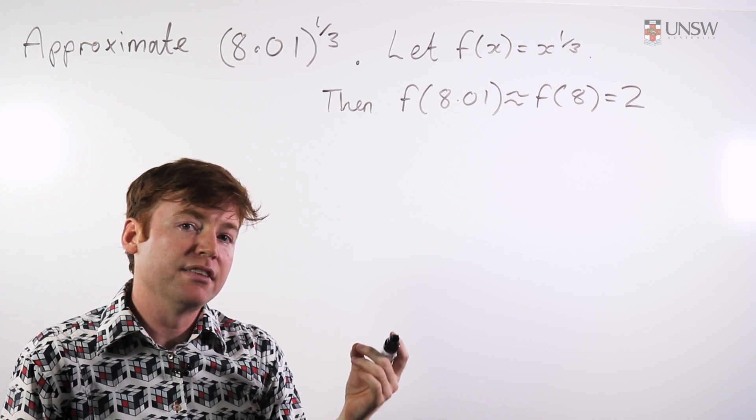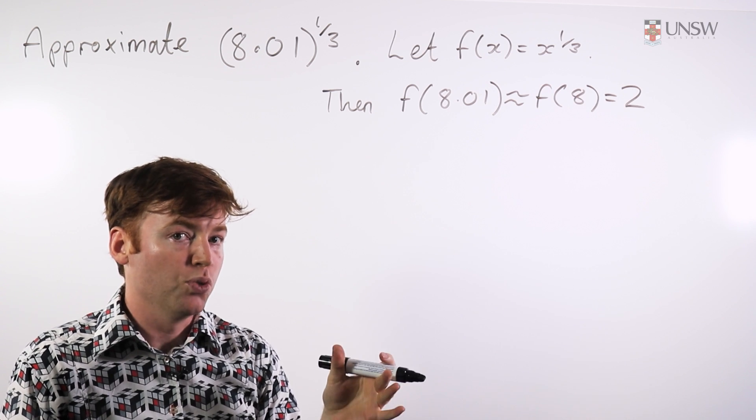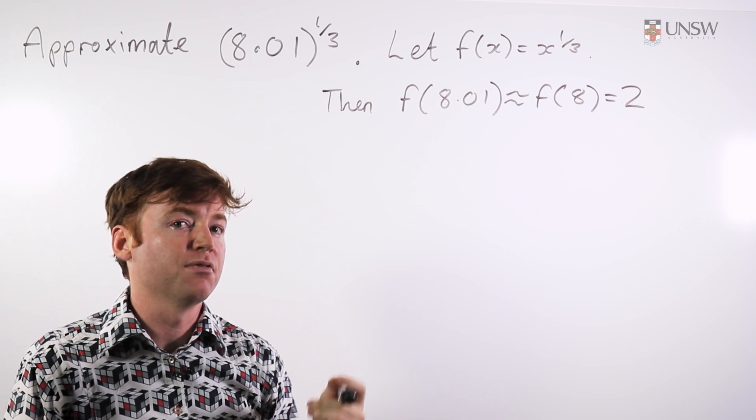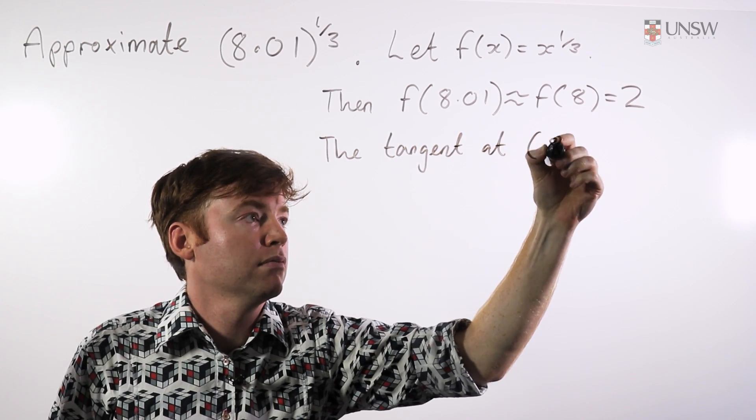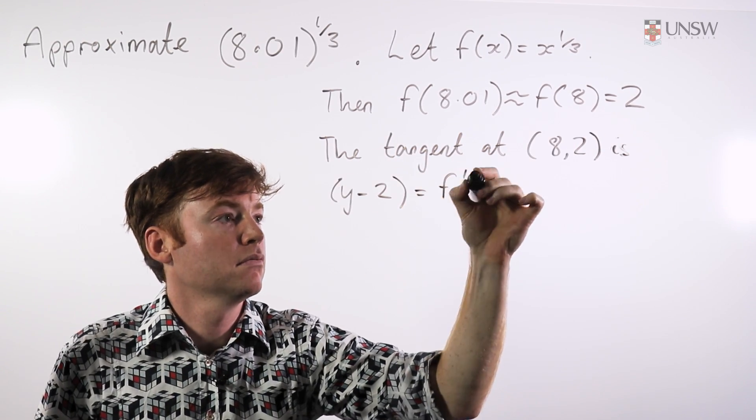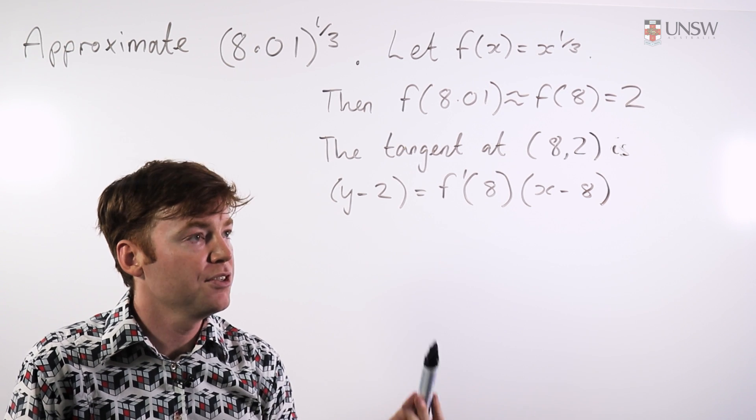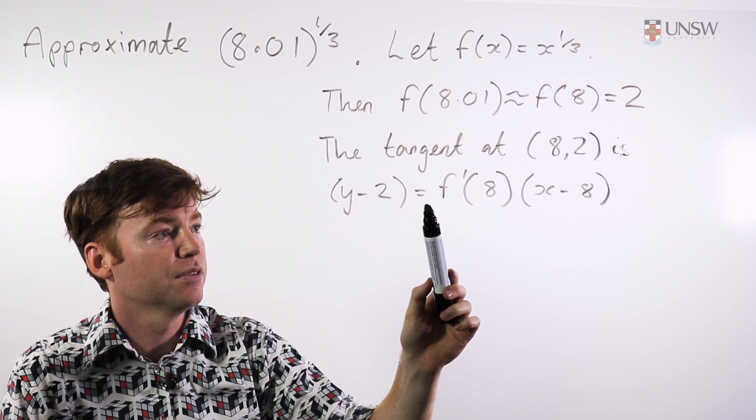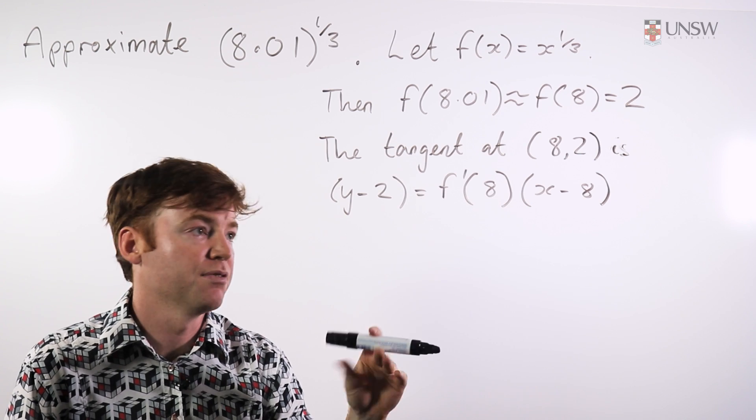What we'll do now is find the tangent to the function at the point 8, 2, and use it as an approximation to the real function. This is the equation for the tangent to the curve passing through the point 8, 2. I've got the correct gradient here, which is the same as the gradient of the function.